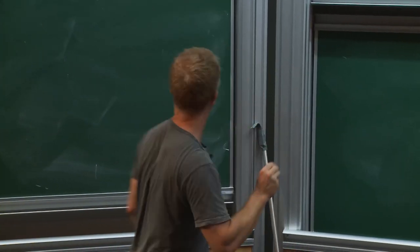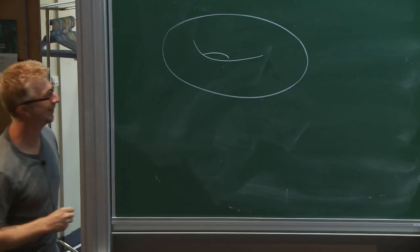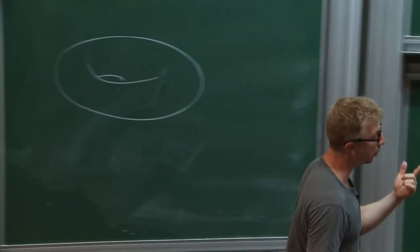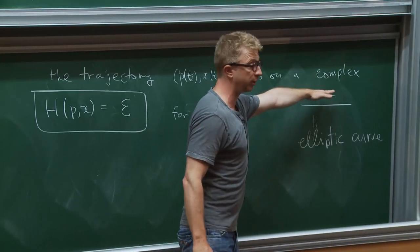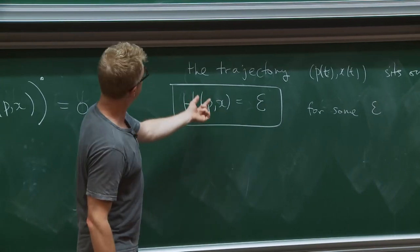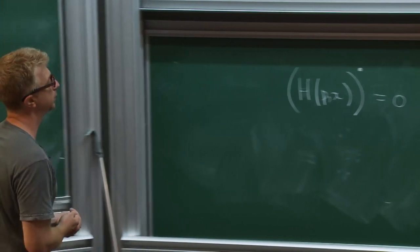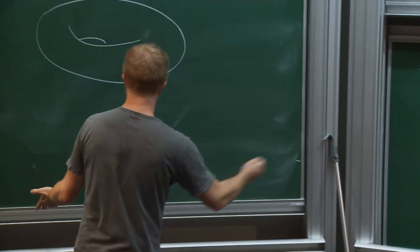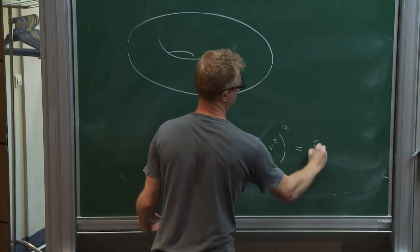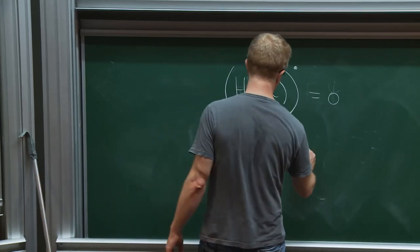The elliptic curve is actually a real torus — it's a curve in complex geometry. P and X are both complex variables, so the space of P and X is four real dimensional. This is a complex equation, so two real equations, defining a real surface in this four-dimensional space. You can bring it to Weierstrass form after some change of variables.